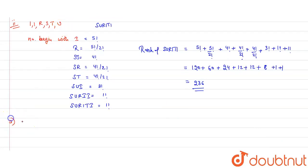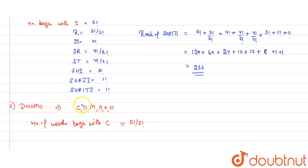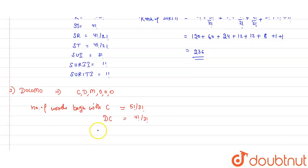Now the third word is DOCOMO. In alphabetic order, the letters are C, D, M, O, O, O. The number of words beginning with C is 5 factorial divided by 3 factorial, since O appears three times in the remaining 5 letters. We don't want C, so we move to D.